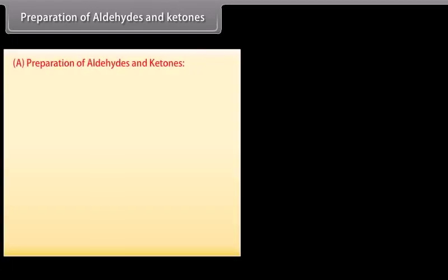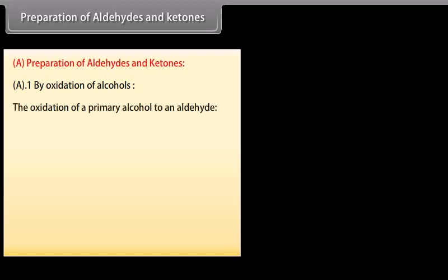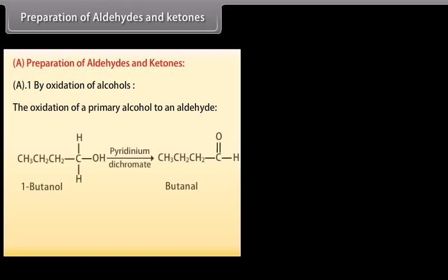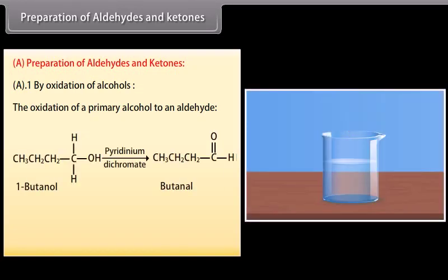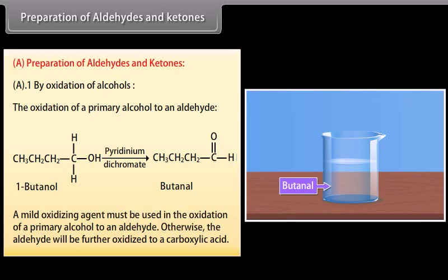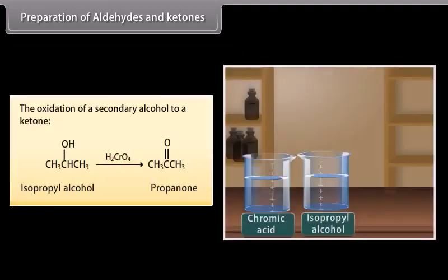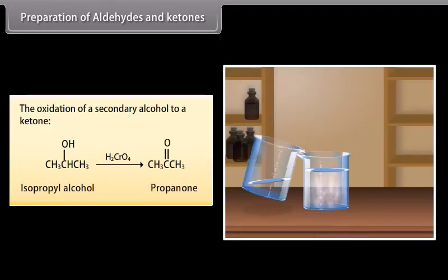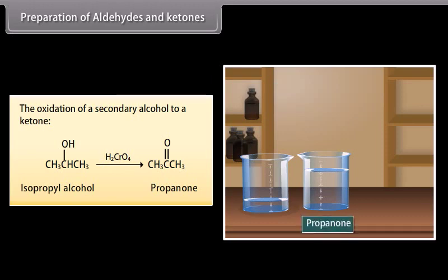By oxidation of alcohols: the oxidation of a primary alcohol to an aldehyde — butanol is oxidized in the presence of pyridinium dichromate to form butanal. A mild oxidizing agent must be used in the oxidation of a primary alcohol to an aldehyde; otherwise, the aldehyde will be further oxidized to a carboxylic acid. The oxidation of a secondary alcohol to a ketone — on adding chromic acid to isopropyl alcohol, it forms propanone, which is a ketone.